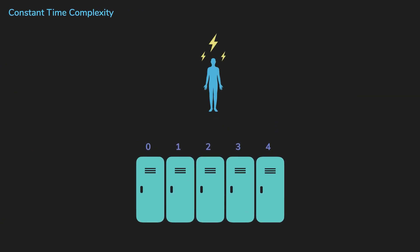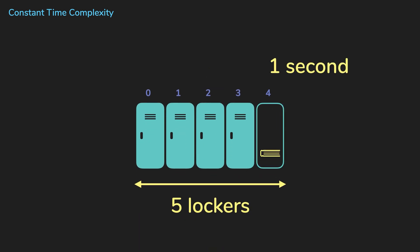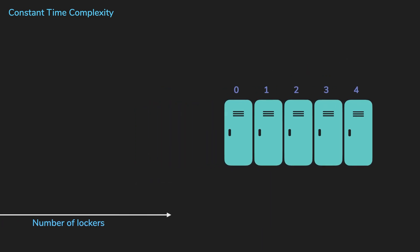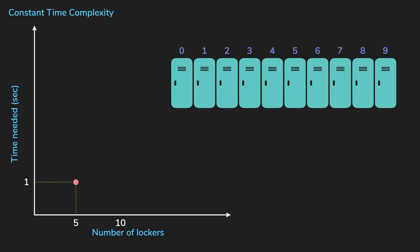If we go back to the lockers this time, let's say we have another person who's psychic and can guess which locker has the book. If the process of retrieving the book takes one second and there are five lockers, it will take one second to get the book. If there are 10 lockers, it'll still be one second because we know where the book is. And then 100 lockers, still one second.